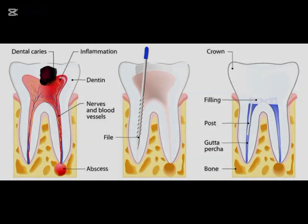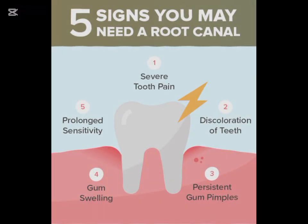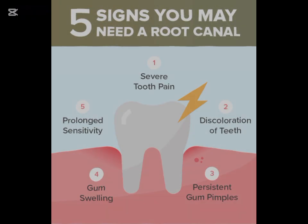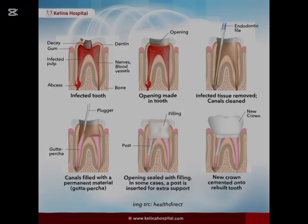Causes of root canal infection include deep cavities, untreated dental caries, cracked or chipped teeth, repeated dental procedures on the same tooth, trauma or injury to the face, and poor oral hygiene. Signs and symptoms you may need RCT: severe toothache especially when chewing, lingering sensitivity to hot or cold, swollen or tender gums, tooth discoloration, a pimple on the gums (abscess). Sometimes there are no symptoms at all, and only x-rays reveal the issue.